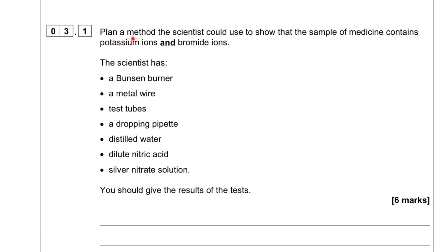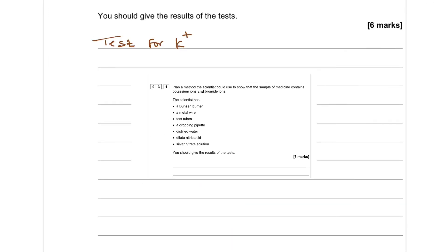Plan a method the scientist would use to show that the sample of medicine contains potassium ions and bromide ions. The scientist has a Bunsen burner, a metal wire, test tubes, a dropping pipette, distilled water, dilute nitric acid, and silver nitrate solution. You should give the results of the tests.